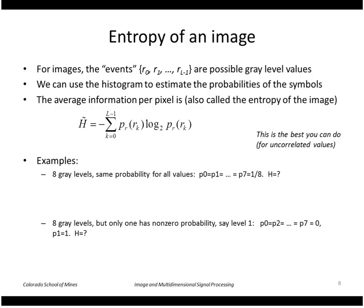Let's take an example. If we have 8 gray levels in our image and all of them have the same probability, namely 1 over 8, then the entropy H is just summing these up.